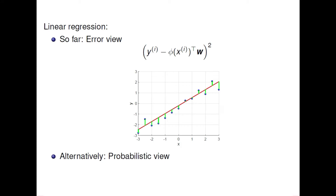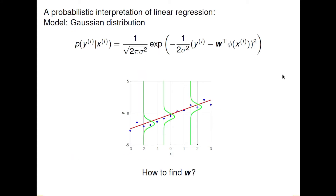Now approaching it probabilistically, we use a Gaussian distribution, which has two parameters: the standard deviation sigma and the mean. Given xi, we are trying to find the probability of yi — this is a conditional probability. The mean is denoted by w transpose times phi of xi, and we state this Gaussian distribution model as shown.